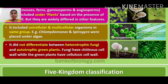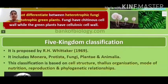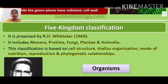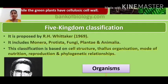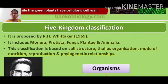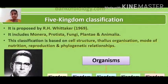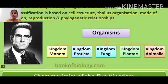You will write the heading Biological Classification and start directly with the five-kingdom classification. The five-kingdom classification was proposed by Whittaker. The five kingdoms are Monera, Protista, Fungi, Plantae, and Animalia. It was based on cell structure, thallus organization, mode of nutrition and reproduction, and phylogenetic relationship — that is, evolutionary relationship.